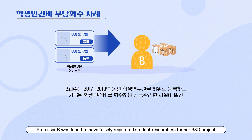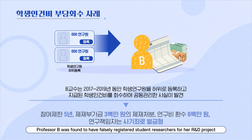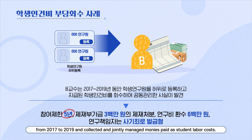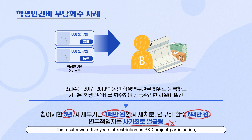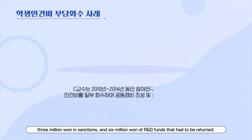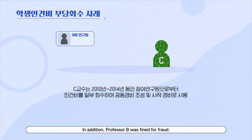Professor B was found to have falsely registered student researchers for her R&D project from 2017 to 2019, and collected and jointly managed monies paid as student labor costs. The results were five years of restriction on R&D project participation, 3 million won in sanctions, and 6 million won of R&D funds that had to be returned. In addition, Professor B was fined for fraud.